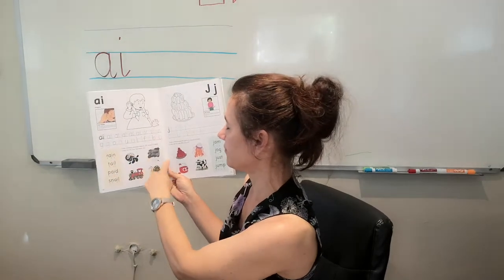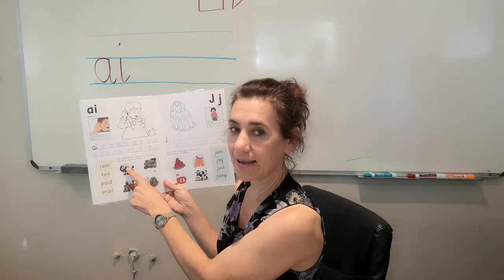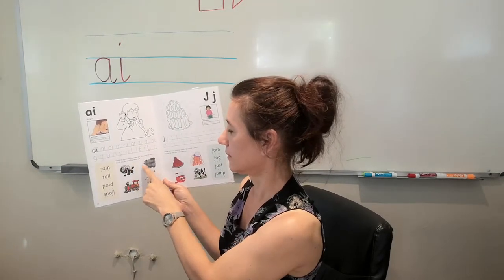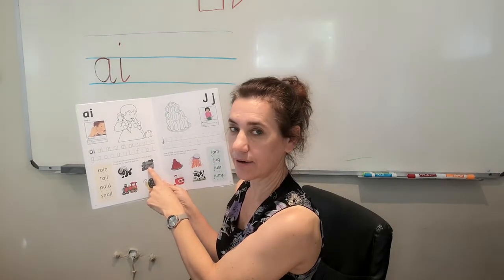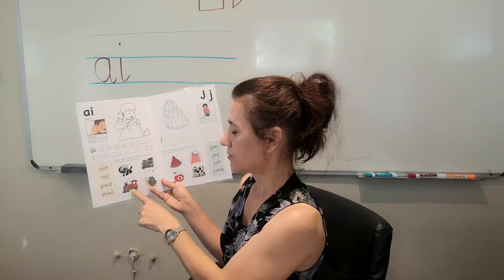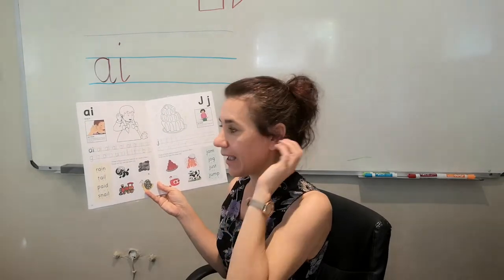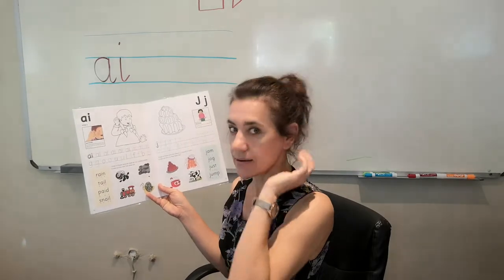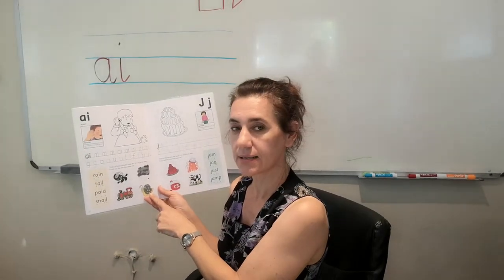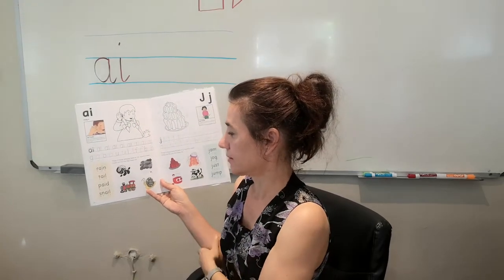And then we have different kinds of pictures. We have paint, P-AI-N-T. Ink, I-N-K. Rain, R-AI-N. Train, T-R-AI-N. Snail, S-N-AI-L.